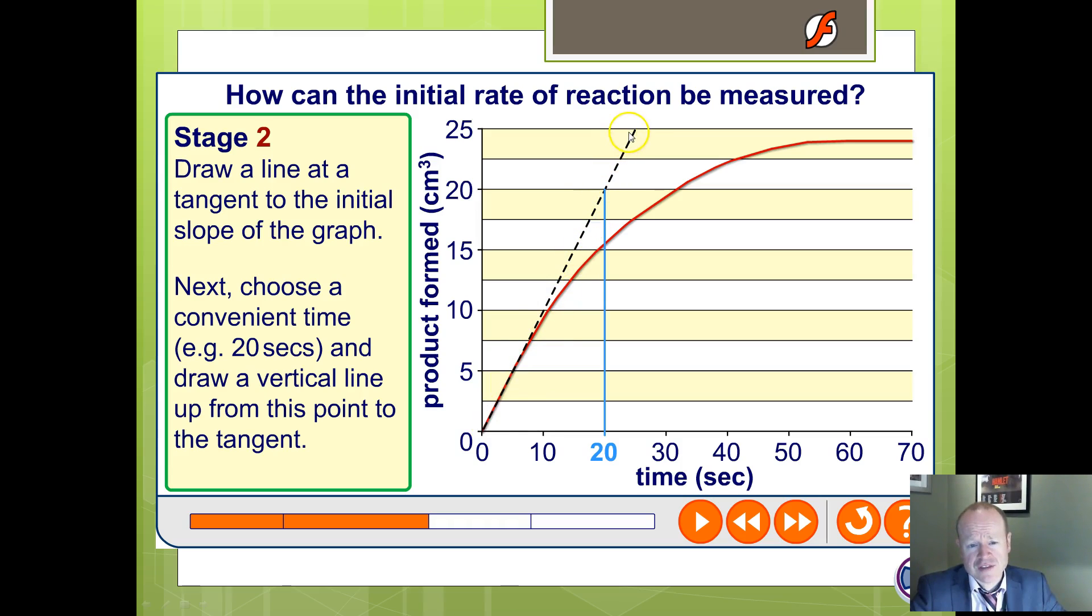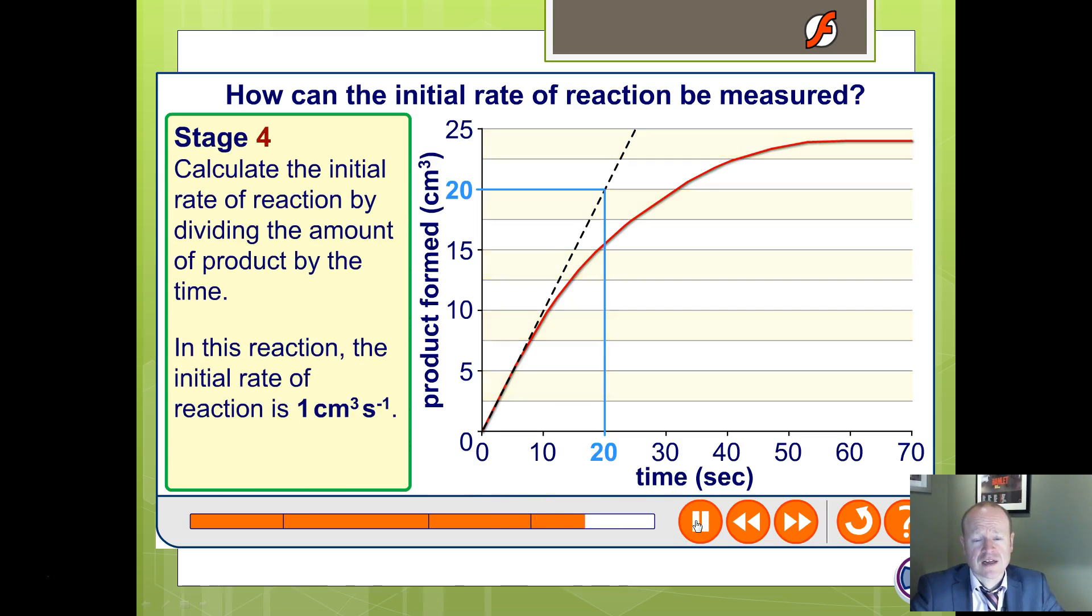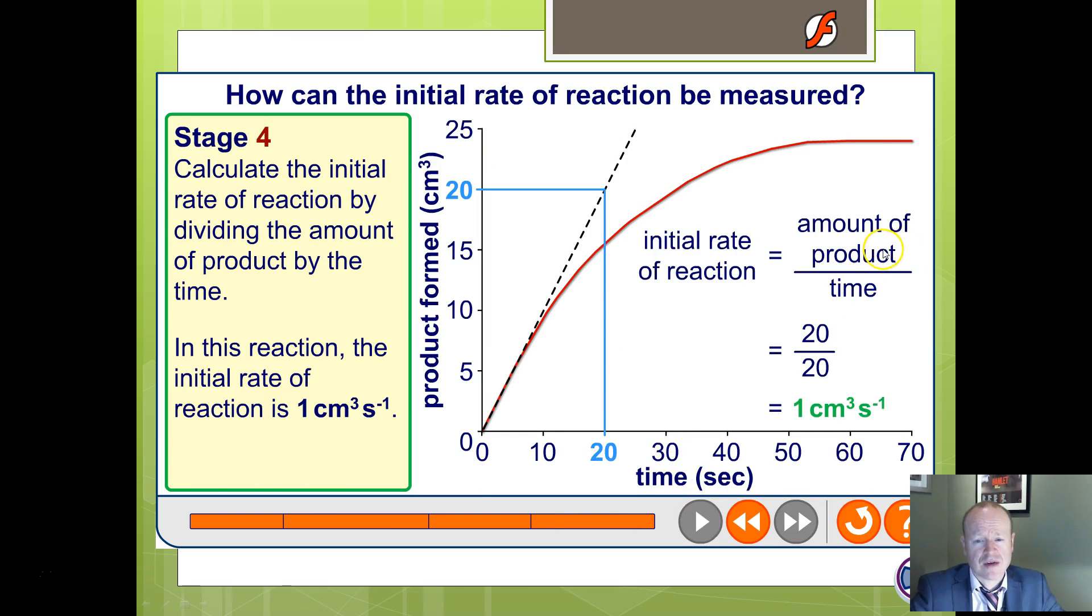So that's the initial slope just here. You continue that on as a straight line and then choose a convenient whole time to draw it up to. For example, they've chosen here at 20 seconds. So 20 up there and 20 across. The intercept is where that hits the y-axis, the amount of product produced after 20 seconds. Calculate the initial rate. So the rate is amount of product divided by time. 20 divided by 20 gives you 1 cm³ s⁻¹. So that's one way of calculating rate.